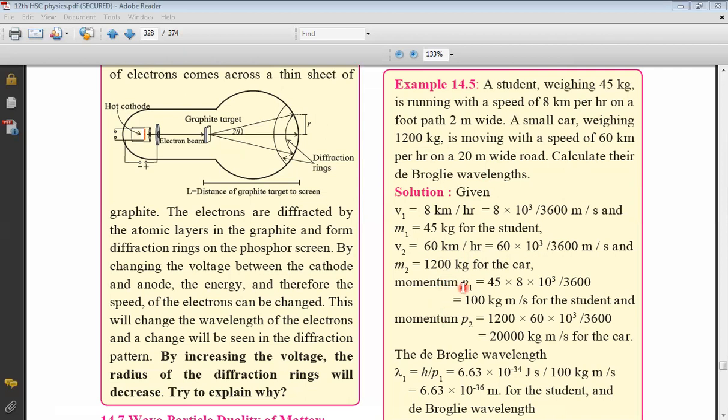And momenta of each, let us find momentum. As such, there is nothing like momentum. It's a man-made term by multiplying mass and velocity. So momentum P1 of student is mass into velocity, M1V1. So 45 kg into 8 into 10 raised to 3 upon 3600 meter per second. Please write the units kg and meter per second.